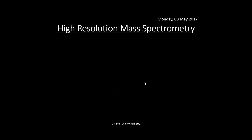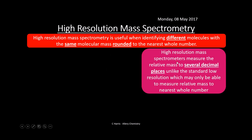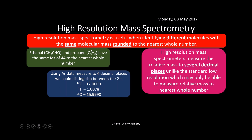This technique is high resolution mass spectrometry, and it solves the problem we just talked about. High resolution mass spectrometry is useful when identifying different molecules with the same molecular mass rounded to the nearest whole number. Standard mass spectrometry gives you a mass to the nearest whole number, but high resolution can do it to a much higher number of decimal places. For example, ethanal CH₃CHO and propane C₃H₈ both have an Mr of 44 to the nearest whole number, so in a standard mass spectrometer you wouldn't know which one's which.